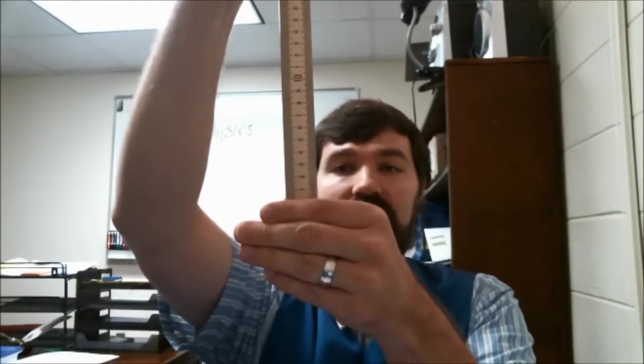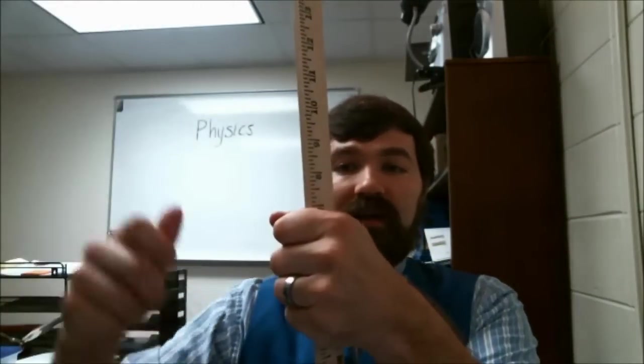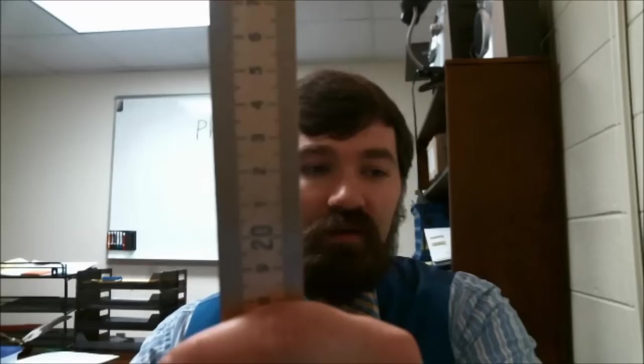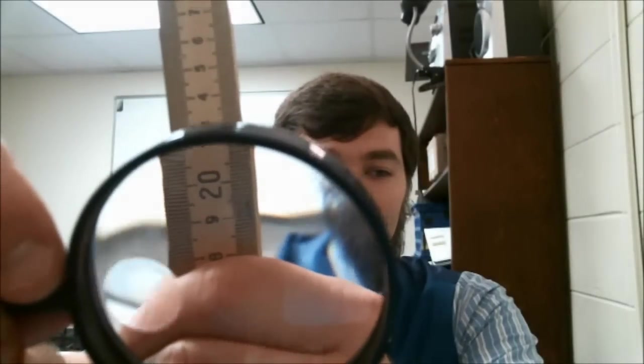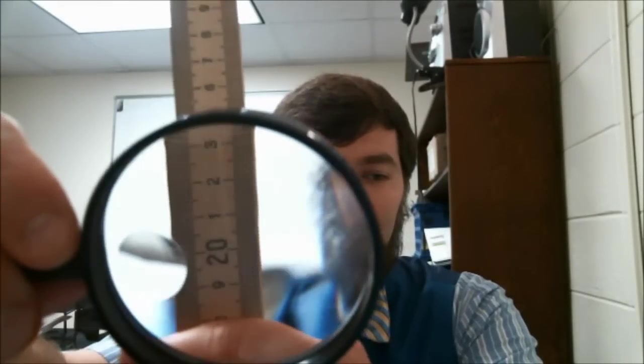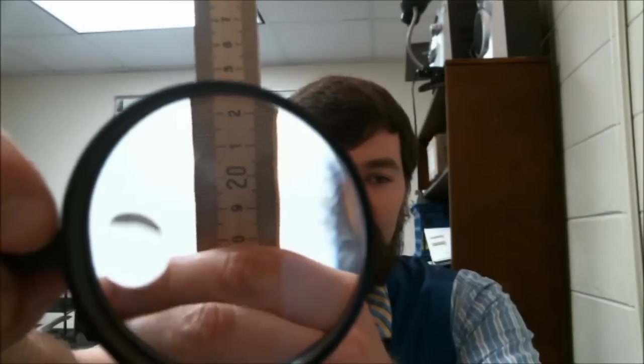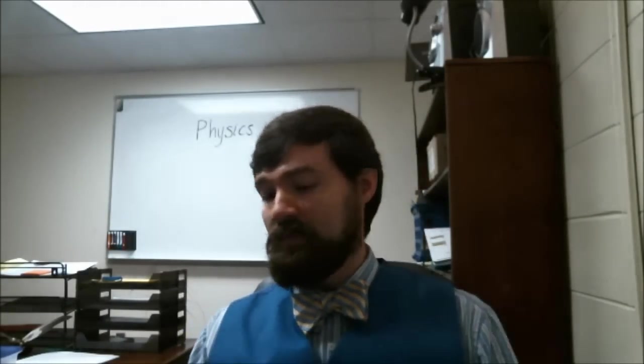And basically what you do is your lab partner drops it, you try to catch it, and then you look and measure what number did you catch it on. So this right here I've caught it just below the 18 mark. Actually if I look closely here it's about 17.6 centimeters. So you'd write down that the meter stick fell 17.6 centimeters.